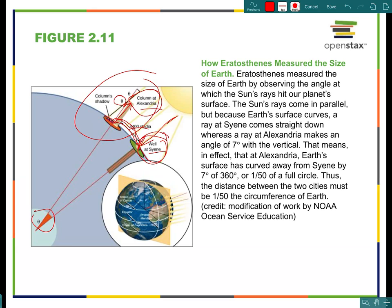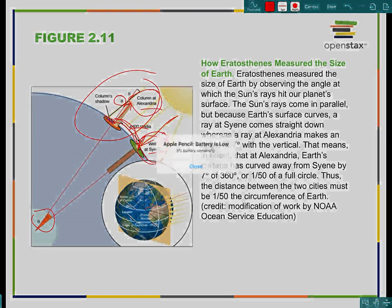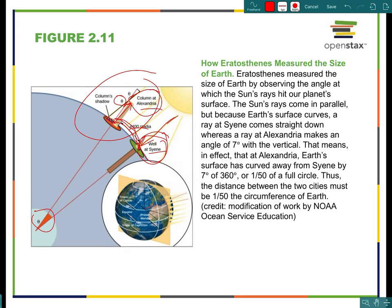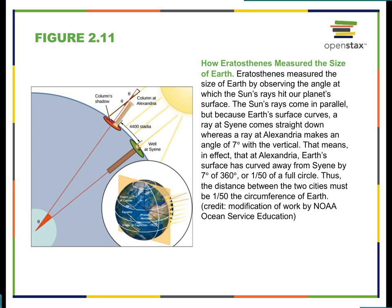Not only did this confirm that the Earth was a sphere, but Eratosthenes had a very accurate measurement of its circumference and radius. Remarkably, a lot of this knowledge was later lost — dispelled and discouraged — and other ideas became prevalent in the centuries that followed.